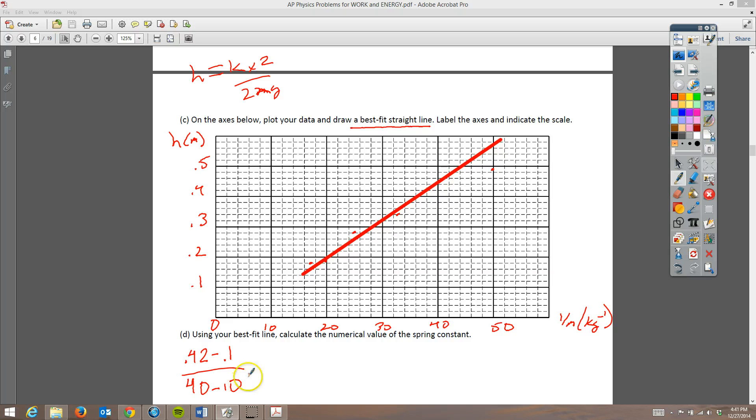I probably need to extend my best fit line down a little bit if I wanted to, but we're going to just leave it there. So this is equal to 0.32 meters over 30 kilograms to the negative 1. And if I do that math, I get 1.07 times 10 to the negative 2. And notice my unit here is a meter times a kilogram because a meter divided by 1 over a kilogram is really just a meter times a kilogram.